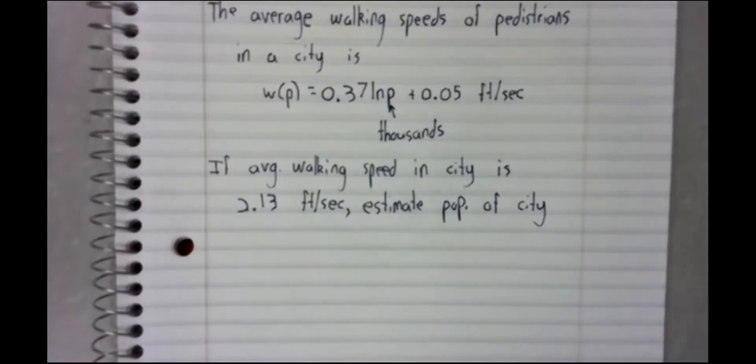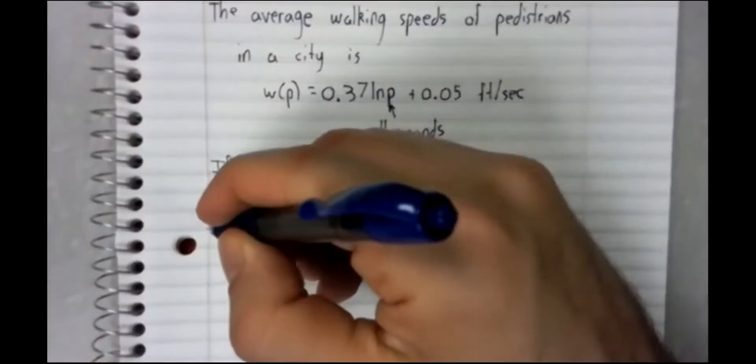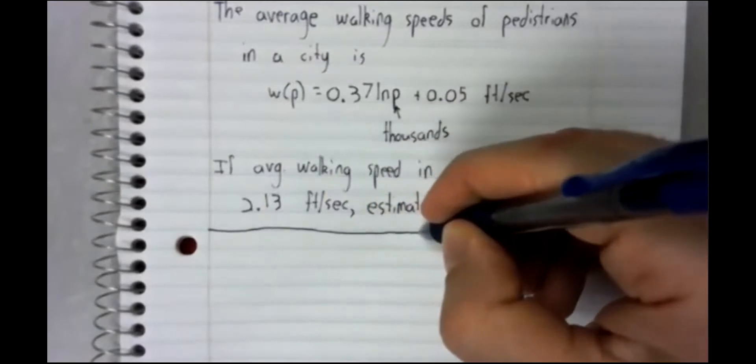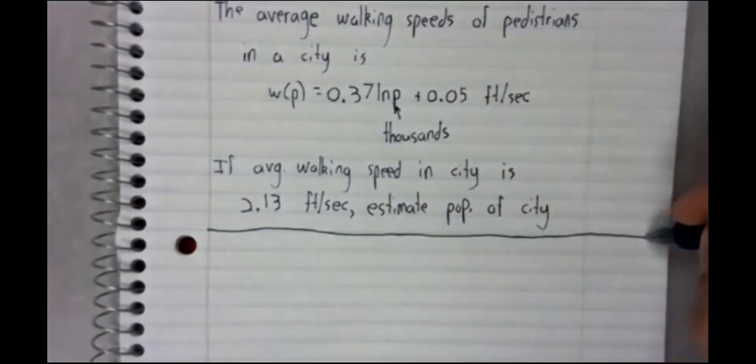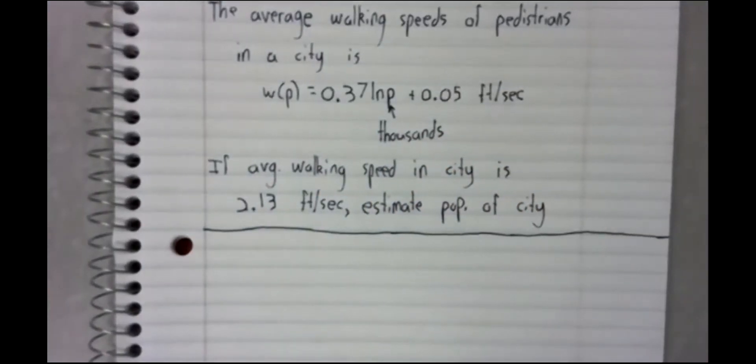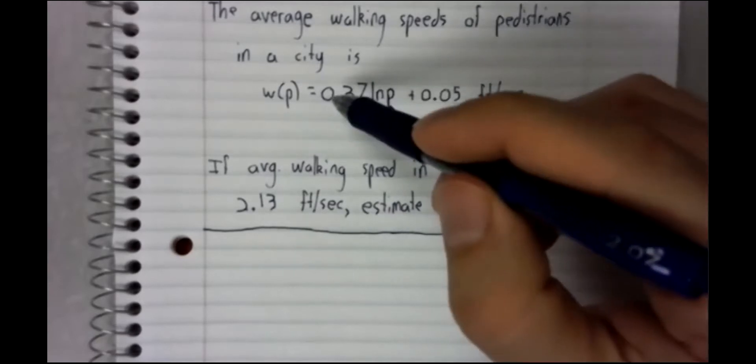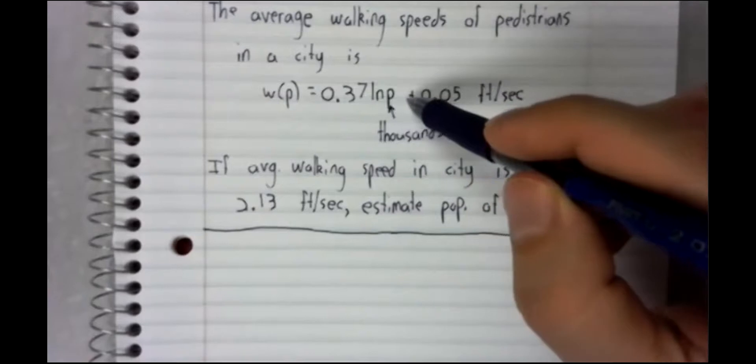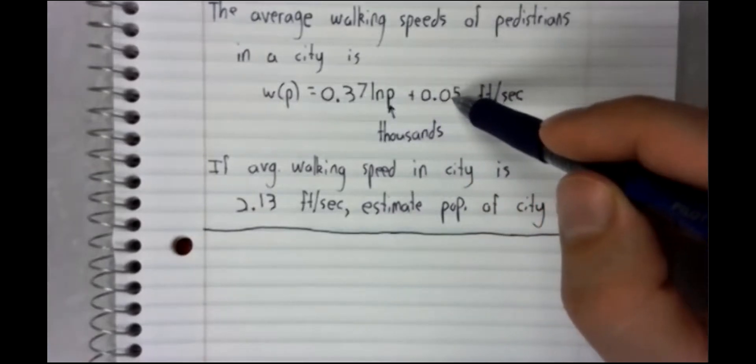There's a statement of the problem. On to the solution. Here's the average walking speed.